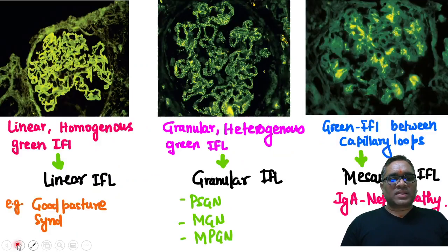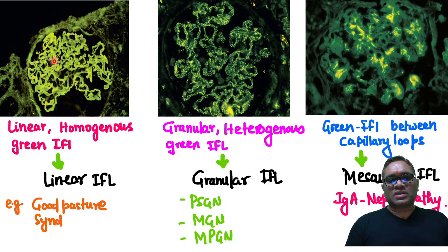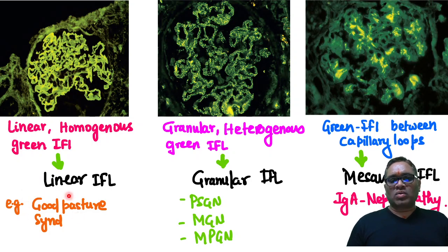If you look at the microscopic view, you can see these are the linear, homogenous green immunofluorescence — linear homogenous green immunofluorescence that will be seen in Goodpasture syndrome.